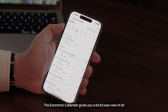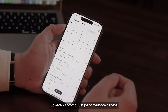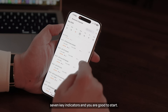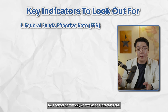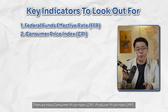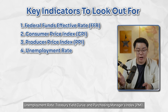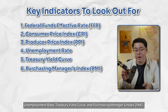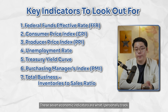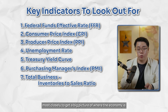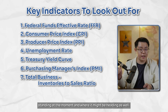The Economic Calendar gives you a bird's-eye view of all major economic events that could influence the market. Here's a pro tip: jot down these seven key indicators and you are good to start — the Federal Funds Effective Rate (FFR), Consumer Price Index (CPI), Producer Price Index (PPI), Unemployment Rate, Treasury Yield Curve, Purchasing Managers Index (PMI), and Total Business Inventories to Sales Ratio. These seven economic indicators are what I personally track most closely to get a big picture of where the economy is standing and where it might be heading.